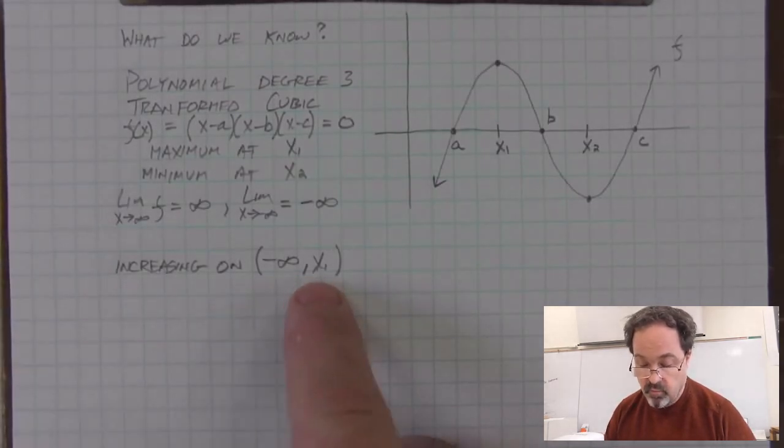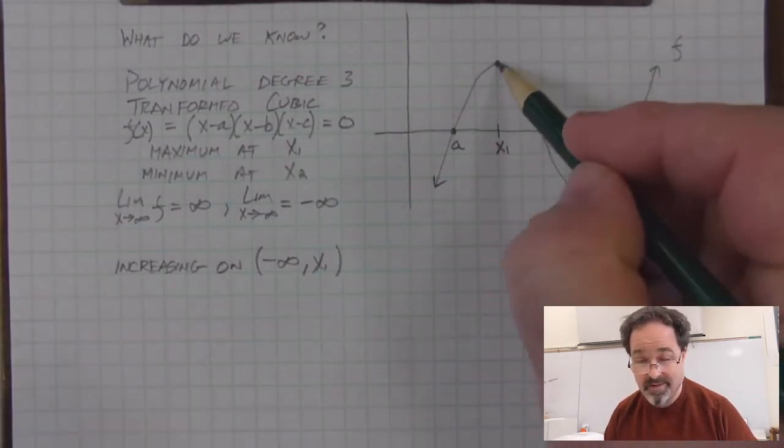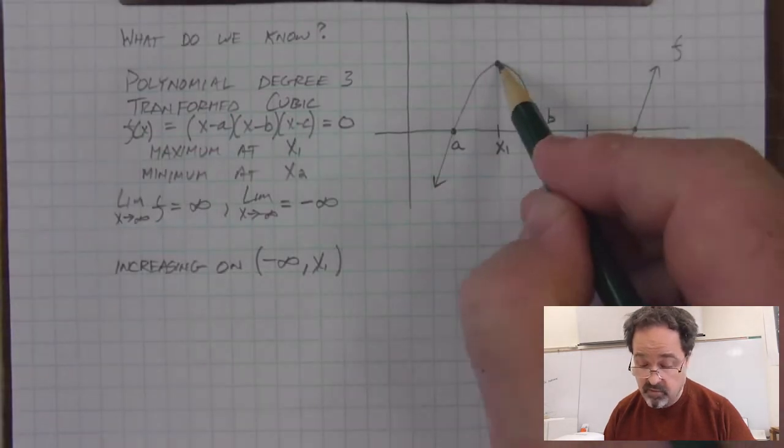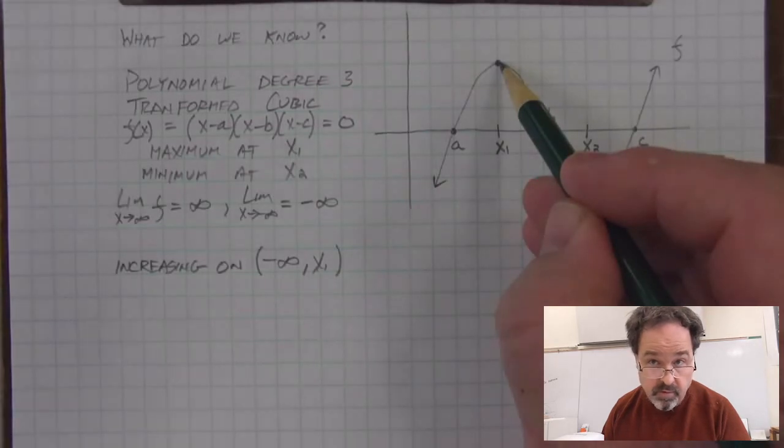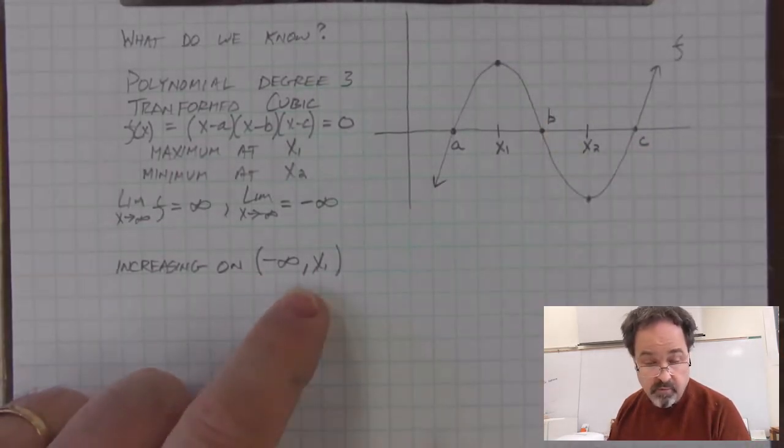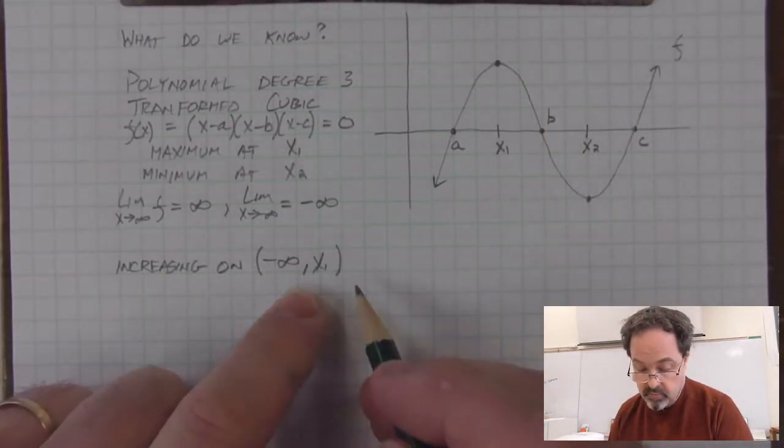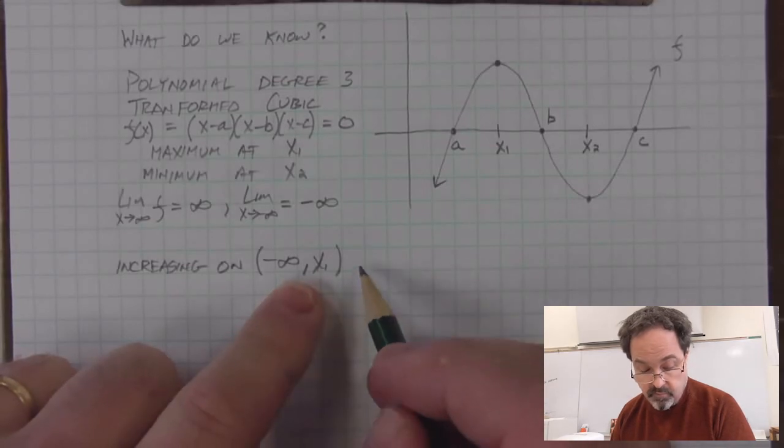Likewise, x sub 1 is a maximum. It's neither increasing or decreasing right at that point. It's increasing before we get there, but we don't include that point as an endpoint for this interval. So this is not a point. This is interval notation.